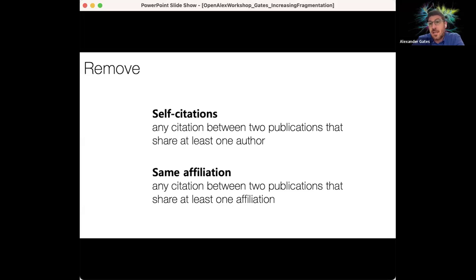And so we can just eliminate those sources of bias by eliminating all references in the citation network that either share a same author or share some affiliation. So it's a very conservative view of removing these, but I think it works pretty well.